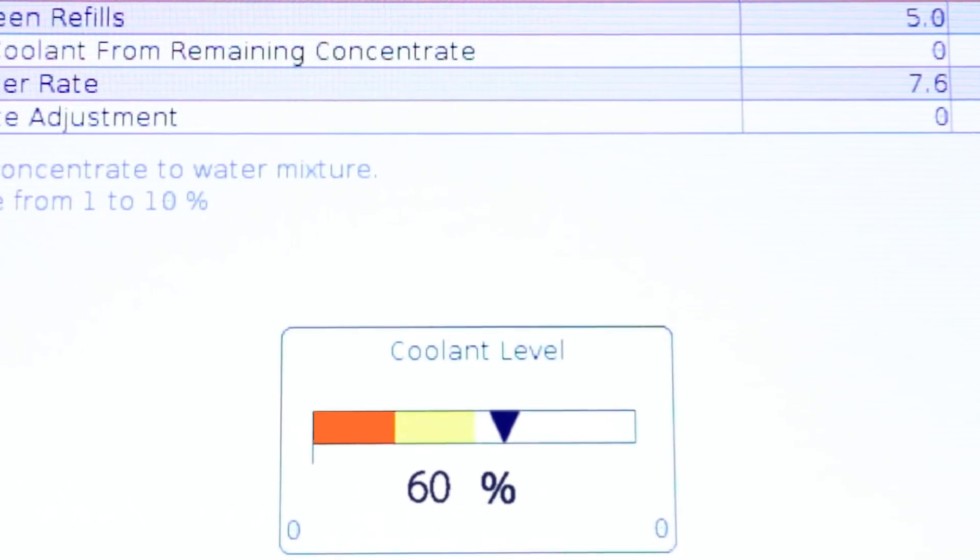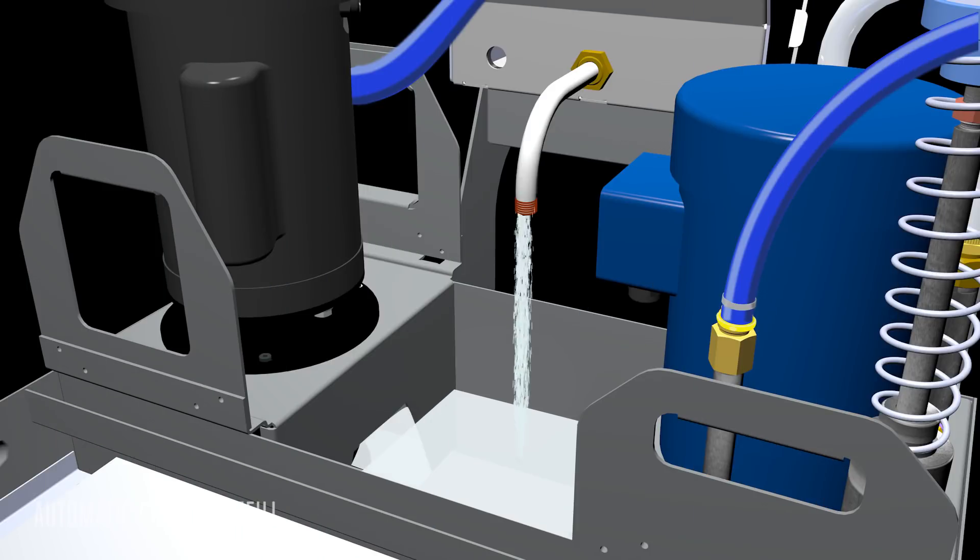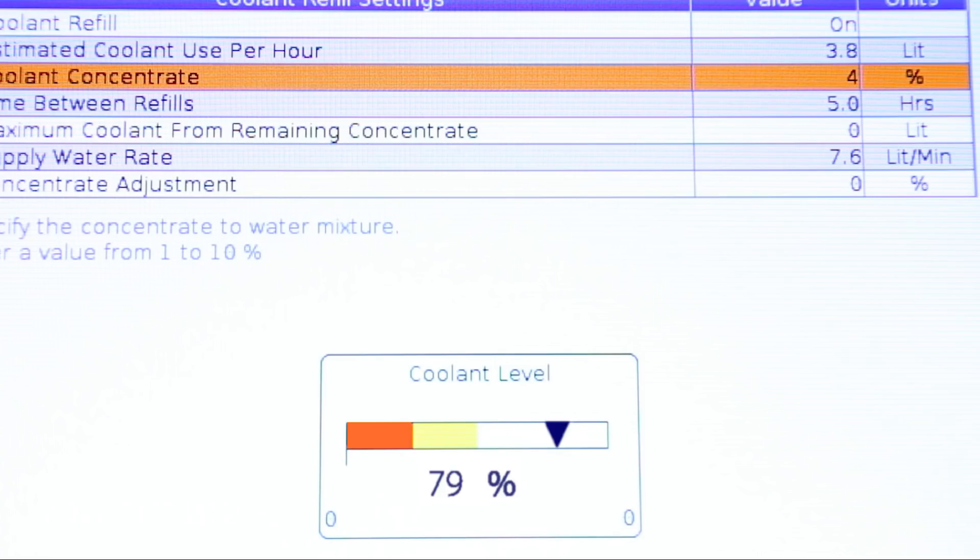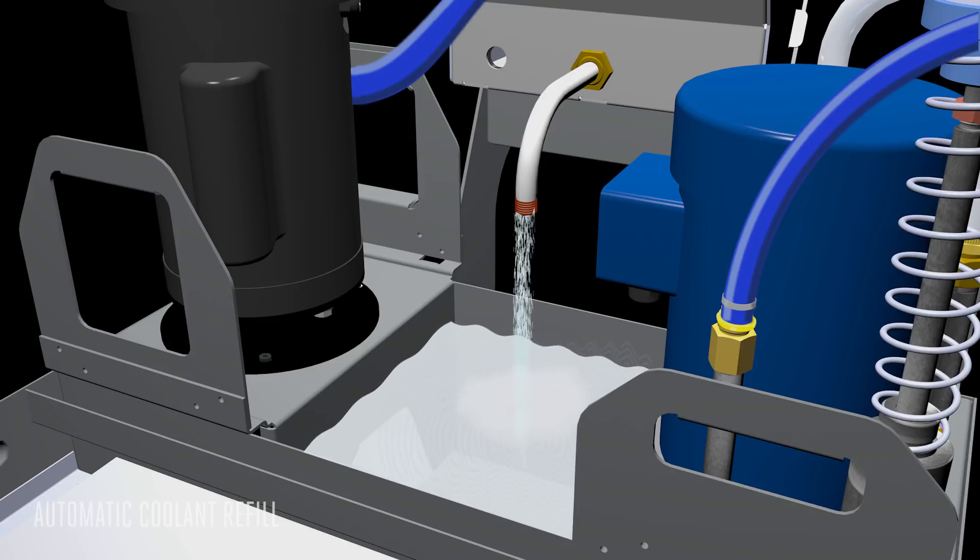When your coolant is low, the system automatically tops it up with exactly the right amount of coolant at exactly the right mix. When your tank reaches 80 percent of its capacity, the system automatically shuts off.